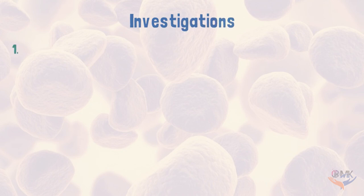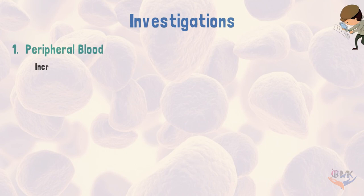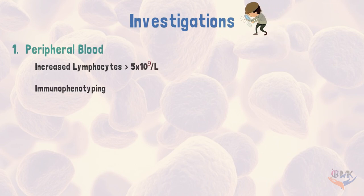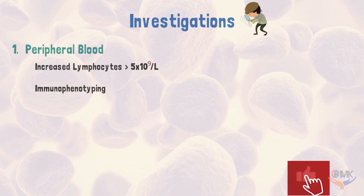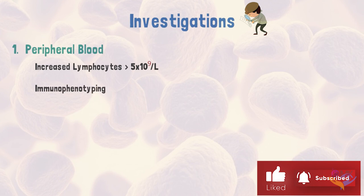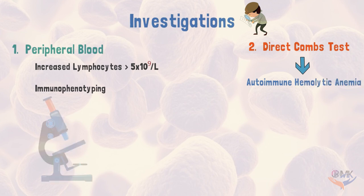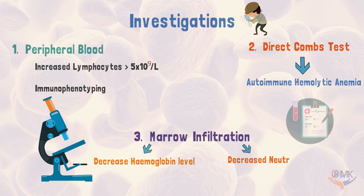Investigations done for diagnosis include peripheral blood examination, showing increased number of lymphocytes. Immunophenotyping is done for accurate diagnosis — it is a process used to identify cells based on the type of antigens or markers on the surface of the cell. In chronic lymphocytic leukemia, monoclonal B cells express B cell antigens CD19 and CD23. Direct Coombs test is done to confirm the presence of autoimmune hemolytic anemia, which is a complication of the disease. Signs of marrow infiltration such as decreased hemoglobin, decreased neutrophil count, and decreased platelet count are also assessed.